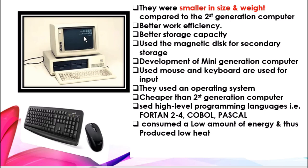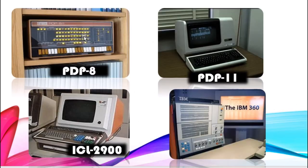Disadvantages of the third generation included that IC chips were very difficult to maintain and required highly sophisticated technology for manufacturing. Air conditioning was also a requirement due to high heat production. Examples of these computers include the PDP-8, PDP-11, ICL 2900, IBM 360, and IBM 370, among many others.